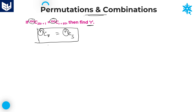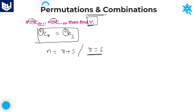Whenever nCr is equal to nCs, we have two conditions: either n is equal to r plus s, or else r is equal to s. I can use any of the two conditions based on my requirement. Here I want the value of r, so I can use r is equal to s.